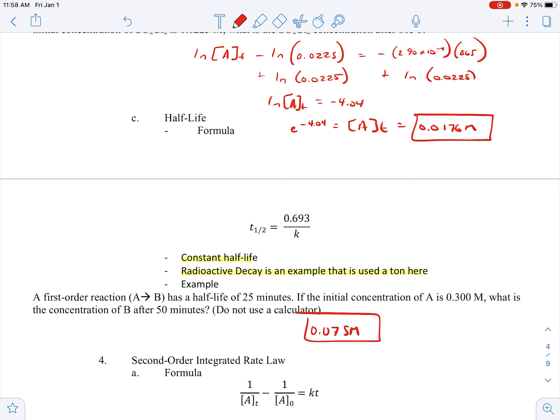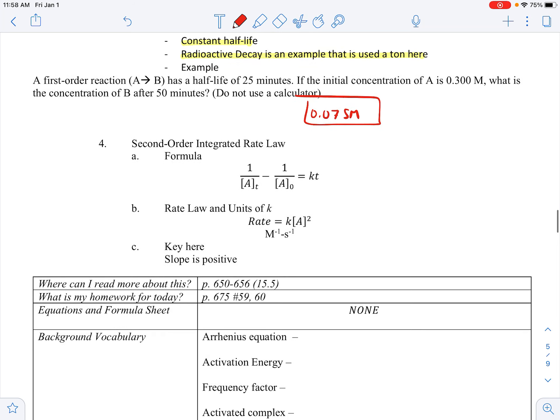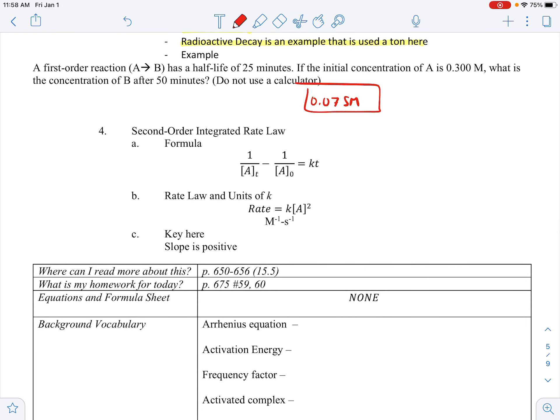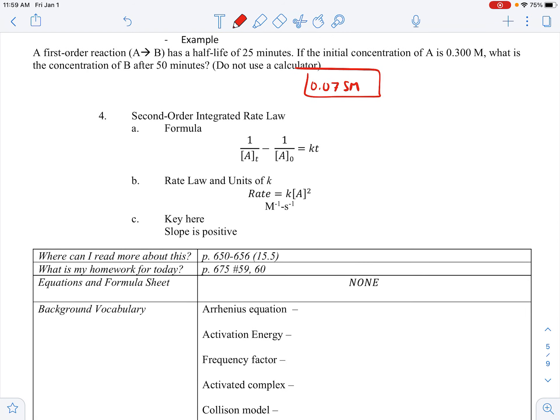Let's move on to the second-order integrated rate law. Now notice how this one's just a touch different here. We have our second-order integrated rate law. Now we have one over the concentration and one over the initial concentration equals kt. So if we again rearrange this to kind of our y equals mx plus b, we've got 1/[A]_t equals kt. Notice here, slope is going to be positive. And then we have plus 1/[A]_0.